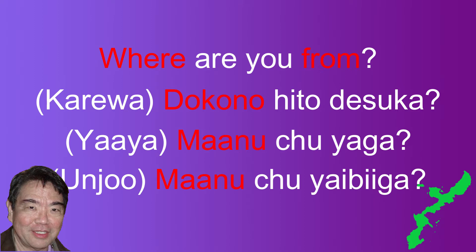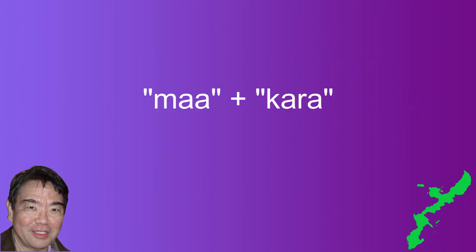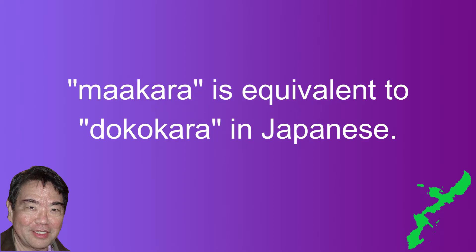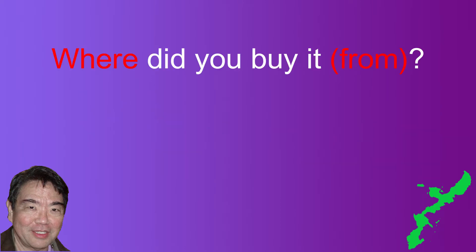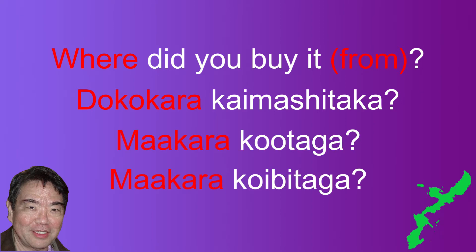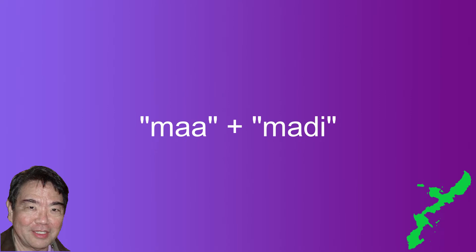The next example is "ma" used with the sentence particle "kara," which we covered in video 43. "Ma kara" means "from where," equivalent to Japanese "doko kara." The example is "where did you buy it?" In Japanese: "doko kara kaimashita ka." In Uchinaguchi: "ma kara kouta ga" in casual form and "ma kara koi bita ga" in polite form.